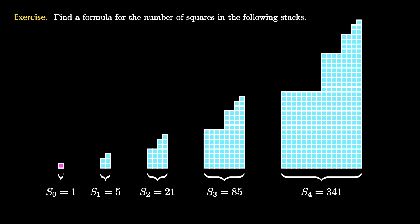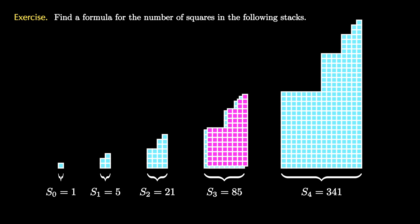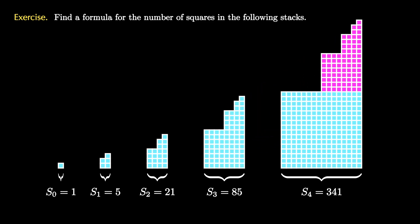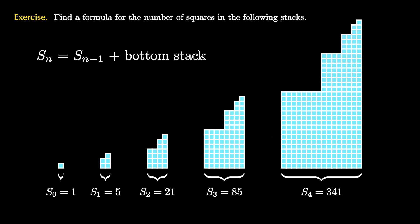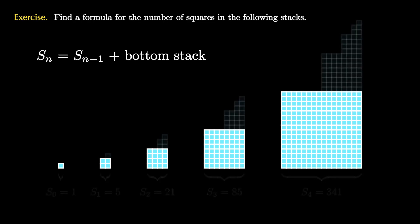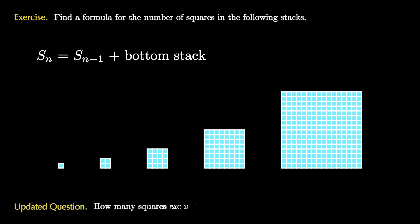To make sense of this sequence, we can see that each stack of squares sits inside the next stack of squares, as shown. This means that we'll be able to find a recursive formula for the sequence s_n. From this we see that s_n is equal to s_{n-1} plus the number of squares in the bottom stack. So we now have an updated question of how many squares there are in the bottom stacks.